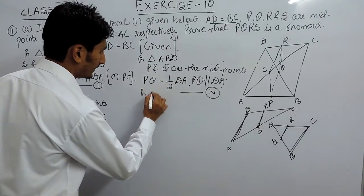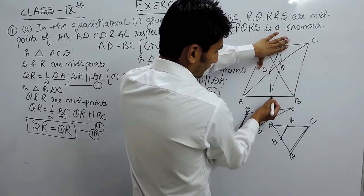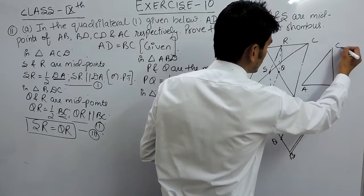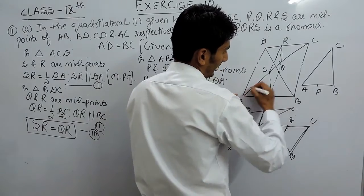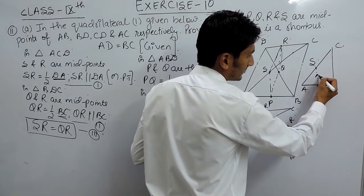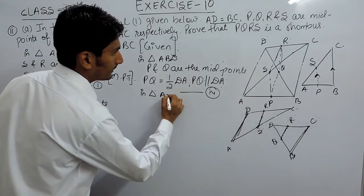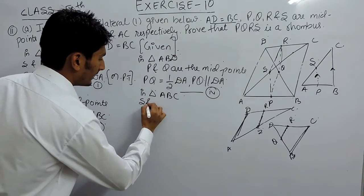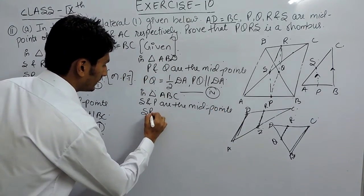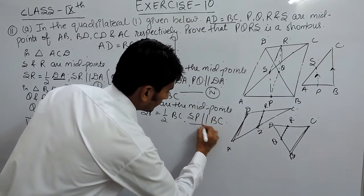Similarly, in triangle ABC, P and S are the midpoints. This is A, this is B, and this is C. P is the midpoint of AB and S is the midpoint of AC. If I join these two midpoints, this must be parallel to the third side BC and must be half of it. So SP must be equal to half of BC and SP must be parallel to BC. This is our fifth equation.